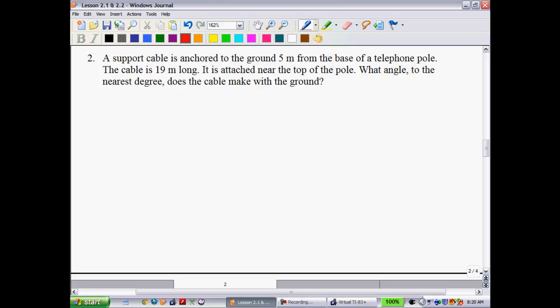Example two. Word problems you're going to see are fairly common in this unit. The reason is we're dealing with real-world type of issues, and trigonometry can help solve them, so you're going to have to get used to these. A support cable is anchored to the ground 5 meters from the base of a telephone pole. The cable is 19 meters long. It is attached near the top of the pole. What angle, to the nearest degree, does the cable make with the ground? So here's my sweet drawing. Let's say we have our telephone pole. We have a cable wire, and it makes a triangle right here, 90-degree triangle.